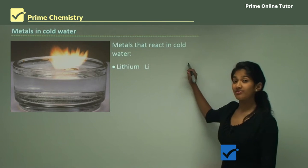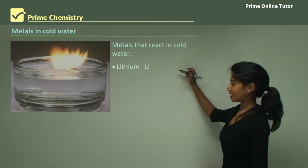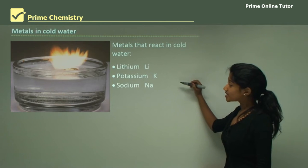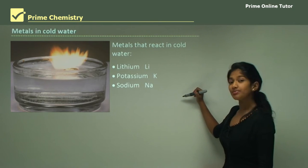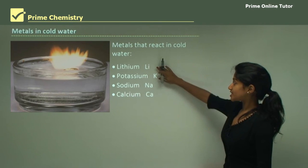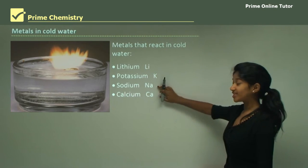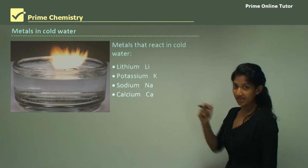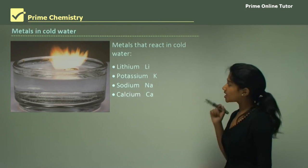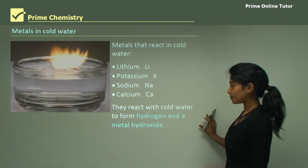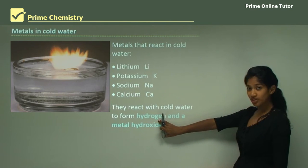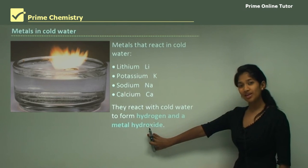Some of the metals that react in cold water are lithium, potassium, sodium and calcium. You can see that I have written the chemical symbols right next to them so you become familiar with them. When metals react with cold water they produce hydrogen and also a metal hydroxide.